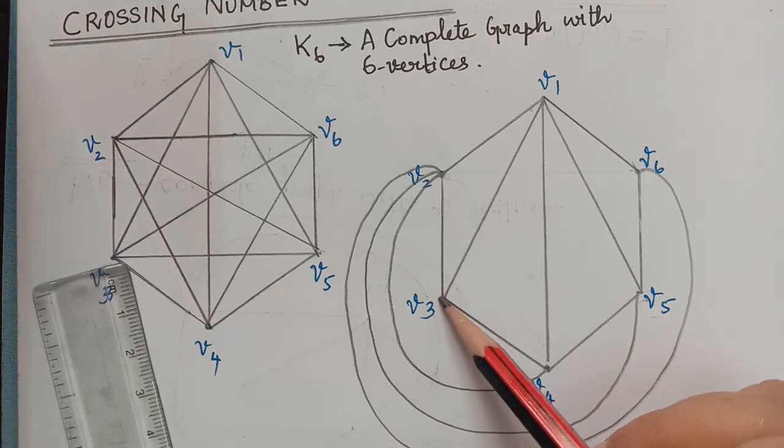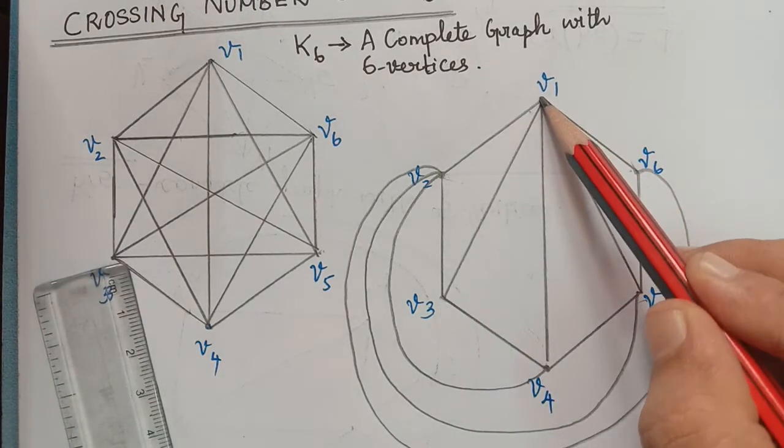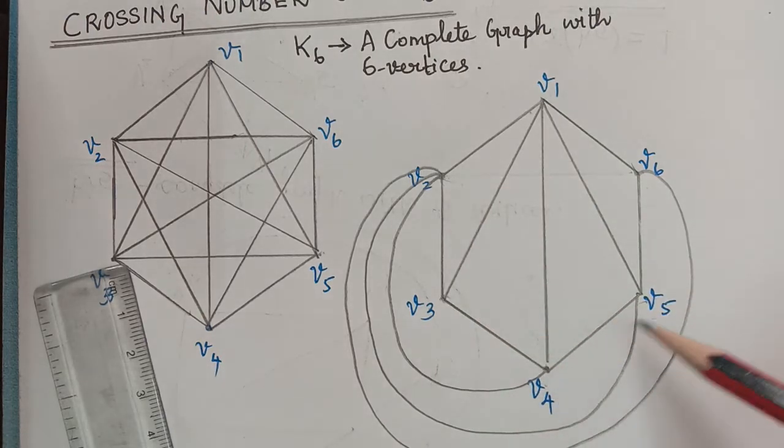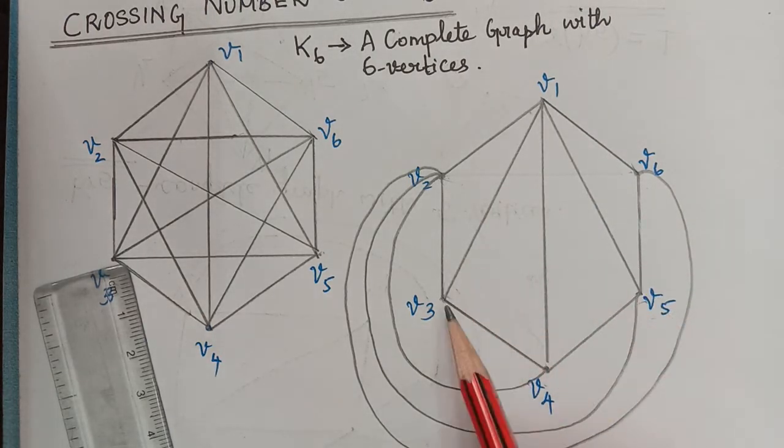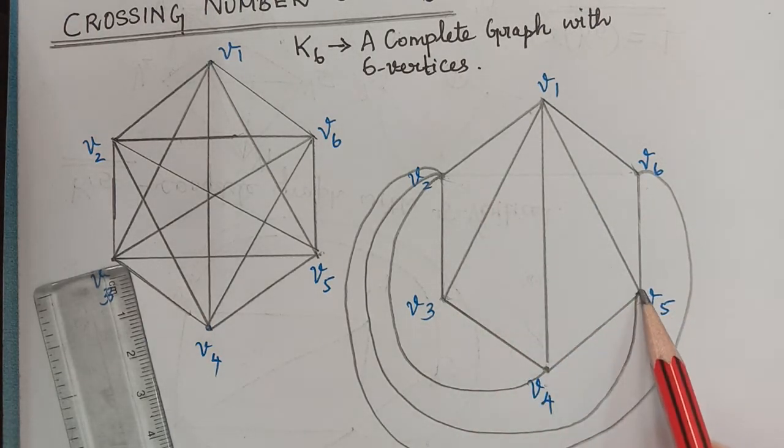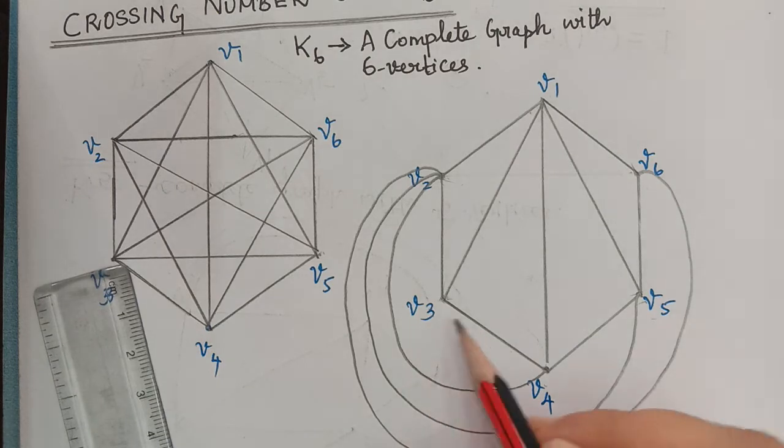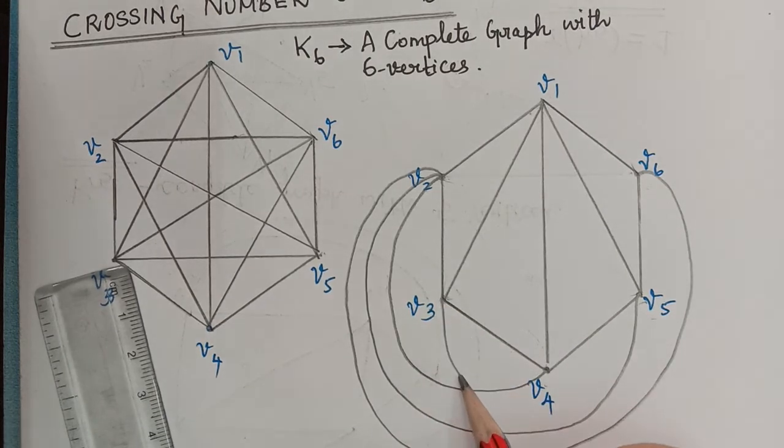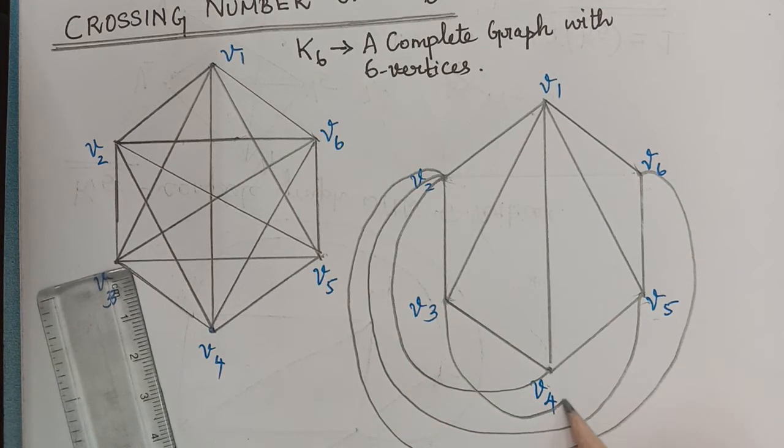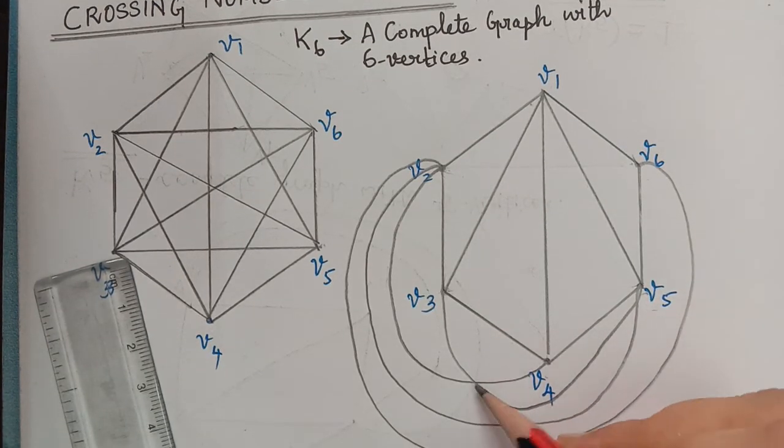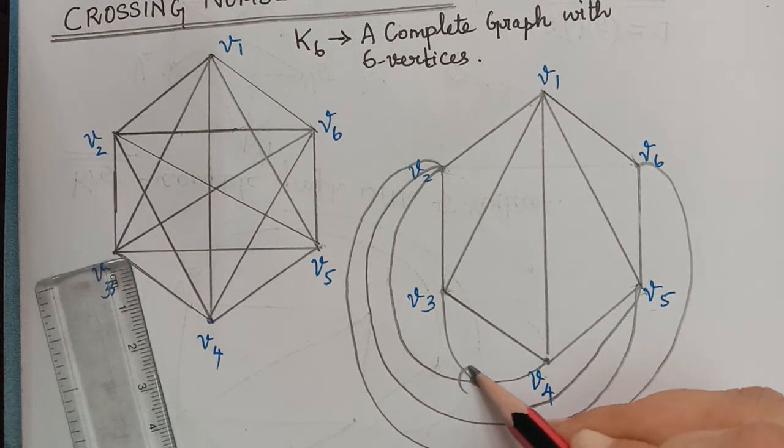Now we shall draw from V3. Already there is an edge between V1, V2, V4. To V5, if we bring in this way, there will be a crossing here. What we can do is we can bring it in this way, but again anyhow, we have to reach V5 by making one crossing at least. So there will be a crossing here already.